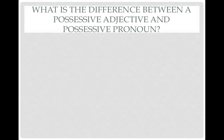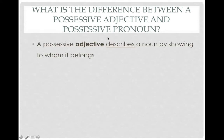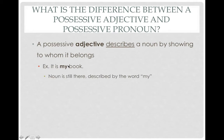So what's the difference between a possessive adjective and a possessive pronoun? You can probably figure out the difference just from the terminology. A possessive adjective describes a noun by showing to whom it belongs — that's the job of an adjective, it describes a noun. So an example is 'It is my book.' In this case, 'my' is a possessive adjective because the noun is still there, described by the word 'my.' This adjective gives us more specific information about this book.